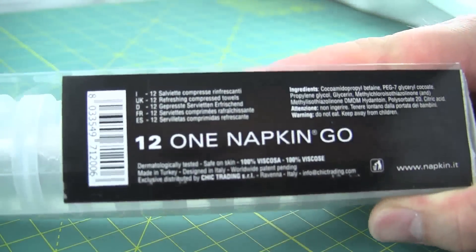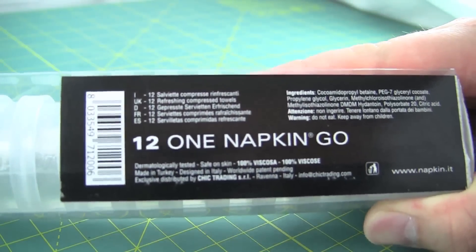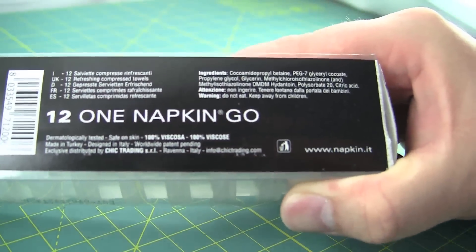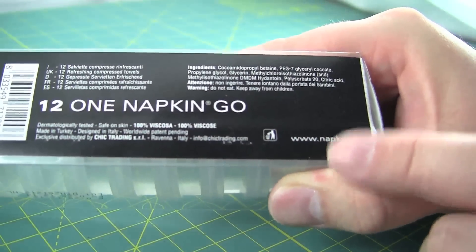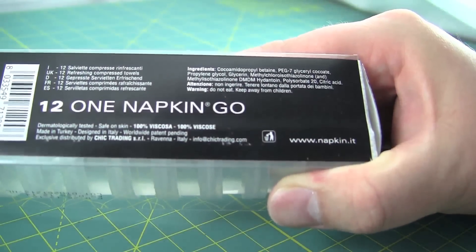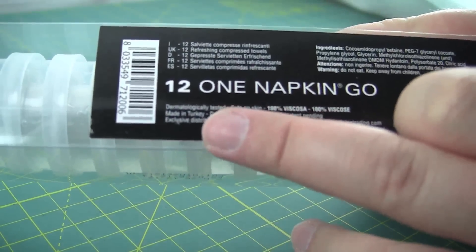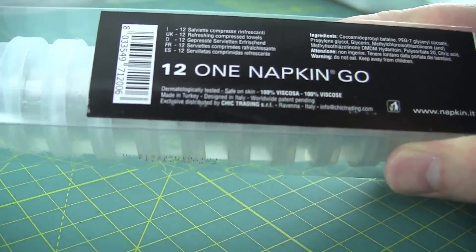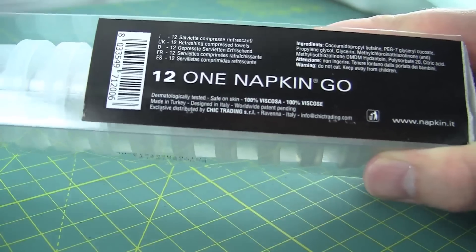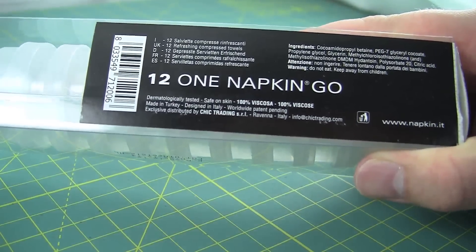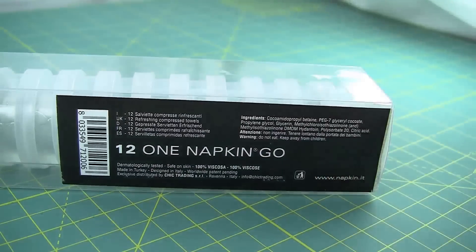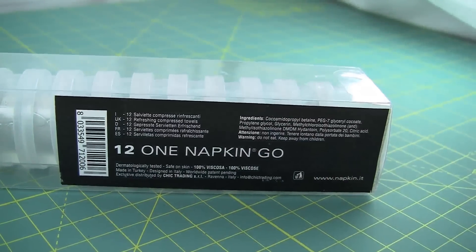All right, so you don't always have water. So they also make the instant napkin go. Anyway, you can check it out. Napkin.it These ones are made by the Turks, but still designed in Italy. I don't know. Seems like a lot of packaging for a napkin or a wet wipe.